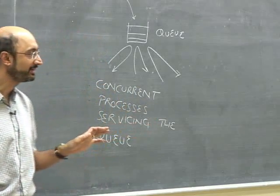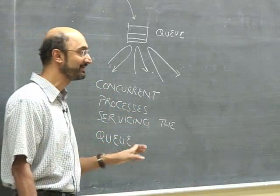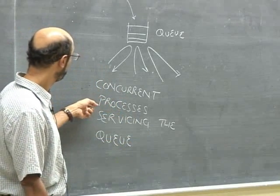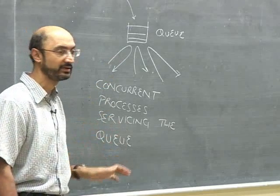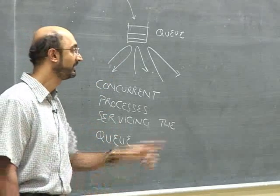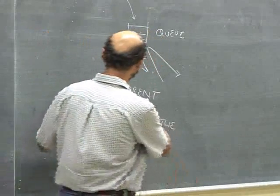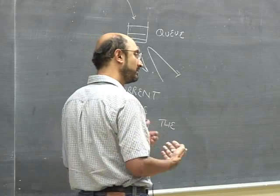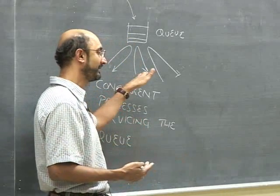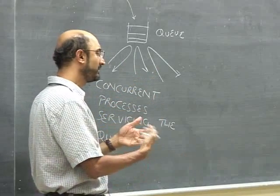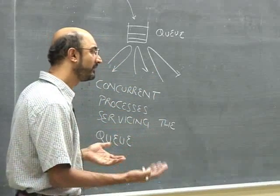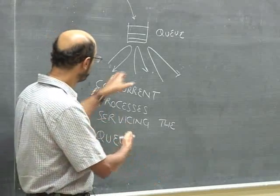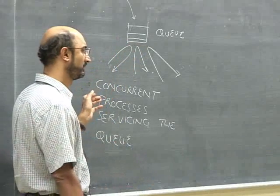I want to make sure everybody understands what these terms mean. Does anybody not understand queue, concurrent, process, and servicing a request? Concurrent means that we can't say which goes before and which goes after — they are happening at the same time. We can't say this happens before that. Concurrent means there is no time ordering. Another word is parallel, though that has other connotations. Concurrent really means they could both be at the queue at the same time.